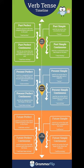Past simple continuous, used for a continuing action that began in the past — for example, 'I was writing a book.' The present tenses: present perfect, used for a completed action or an action that began in the past and continued until the present.